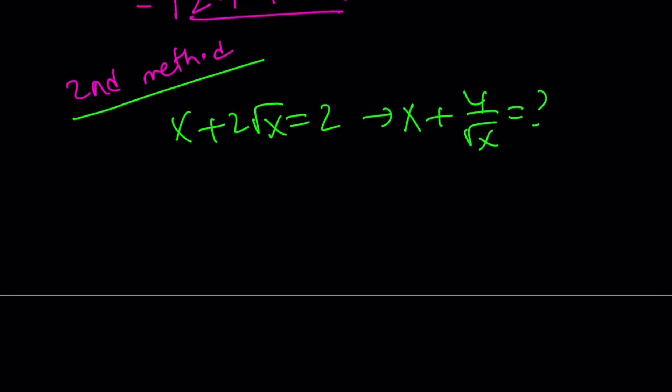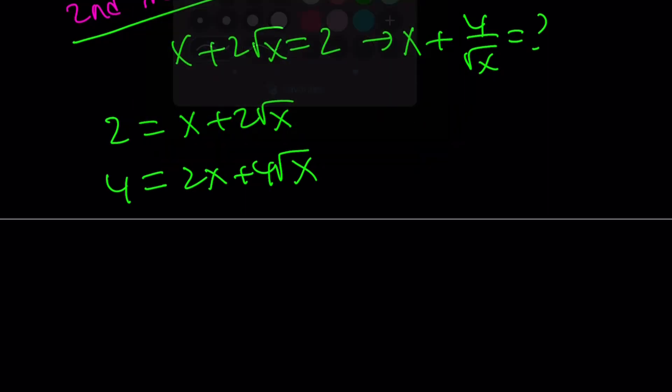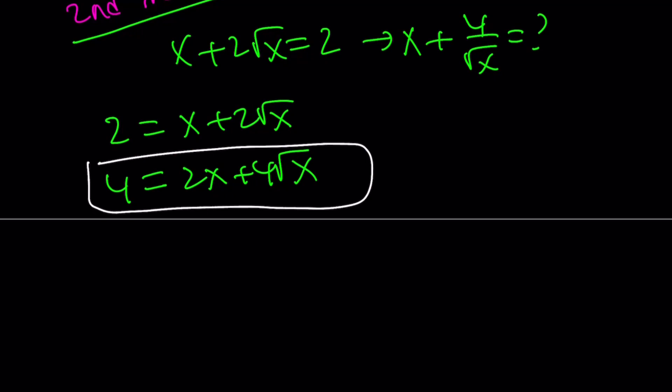Here's how the second method works. We're going to set 2 equal to x plus 2 root x because that's what it is. I just switch sides, and then I'm just going to double both sides, multiply by 2. That gives us 4 equals 2x plus 4 root x. Now, why did I do that? There's a good reason. I'm going to go ahead and substitute that here.